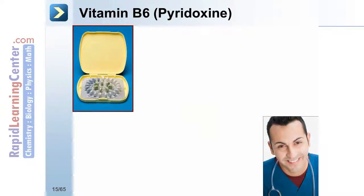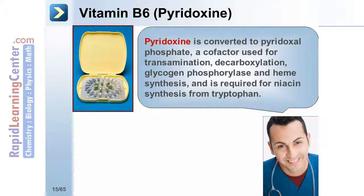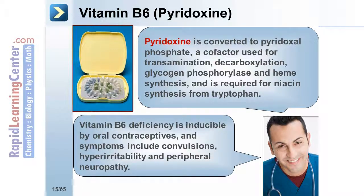Vitamin B6, or pyridoxine, is converted to pyridoxal phosphate, a cofactor used for transamination, decarboxylation, glycogen phosphorylase, and heme synthesis, and is also required for niacin synthesis from tryptophan. Vitamin B6 deficiency is induced by oral contraceptives, and symptoms include convulsions, hyperirritability, and peripheral neuropathy.